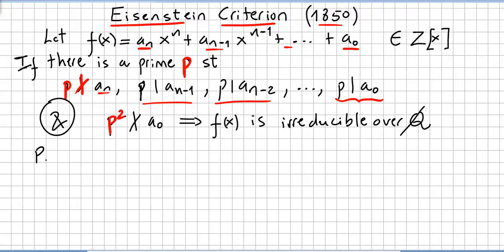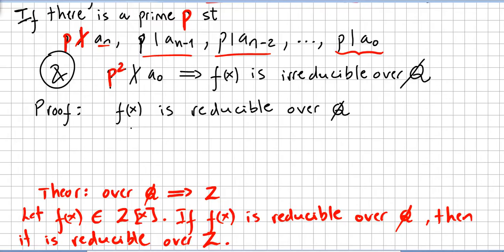This is such an important theorem that we cannot skip the proof. If the polynomial is reducible over the rationals, we saw in a previous video — probably two videos ago — a theorem that says reducible over the rationals implies reducible over the integers.